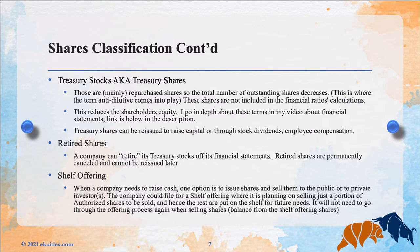Next, we have something called retired shares. A company can retire its treasury stocks — we said treasury stocks could be reissued or resold to raise capital. But a company could also retire its treasury stocks, cancelling them off its financial statements and balance sheet. They are permanently cancelled and cannot be reissued later. In other words, this reduces the authorized shares.